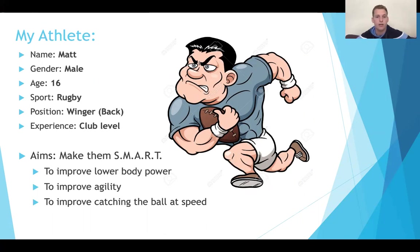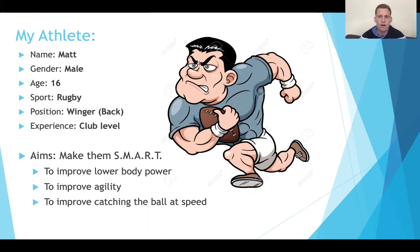Here is my athlete — I've just created him. You could use someone you know, someone else in the group, or use me if you like. My athlete is called Matt. He's male, 16 years old, a rugby player, and a winger. So already I'm starting to think about the attributes of a winger: they're fast, they're agile, they're powerful. His experience level is club level — not elite, Olympic, or premiership. He's just a club-level rugby player.